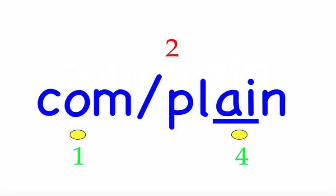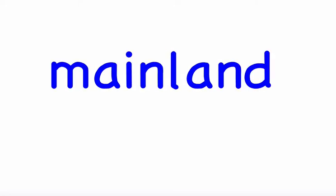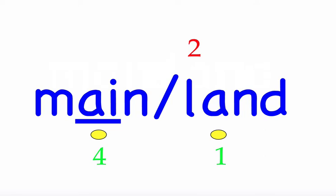The next word is 'mainland.' The ship landed on the mainland. This is a compound word — two regular words joined to create a new word: 'main' and 'land.' First syllable 'main' — three sounds, M-A-I-N. Second syllable 'land' — four sounds, L-A-N-D. Mark the word. Mainland.